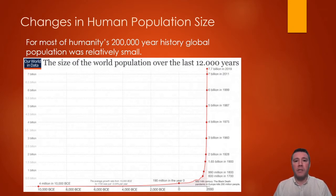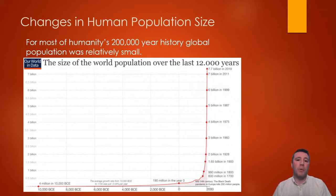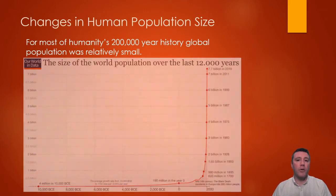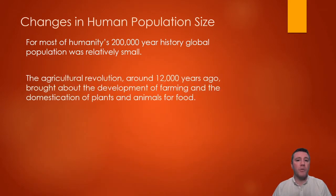Estimates supported by scientific evidence tell us that the global human population was probably somewhere around a million for most of that time. But around 12,000 years ago, arguably one of the most important developments in the history of civilization began: the agricultural revolution.